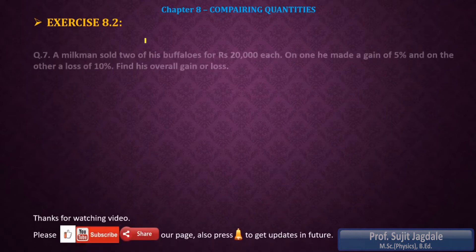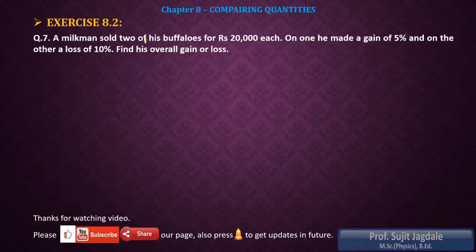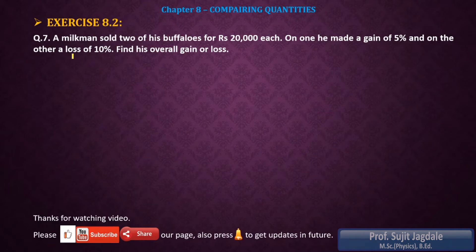The example is: a milkman sold two of his buffalos for Rs 20,000 each. On one he made a gain of 5% and on the other he had a loss of 10%. Find his overall gain or loss.